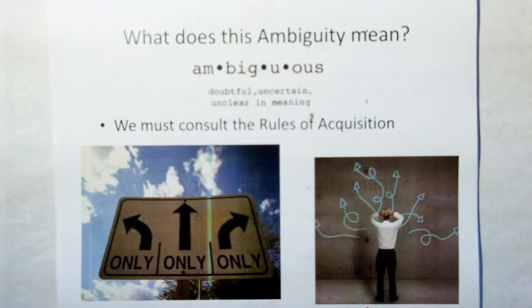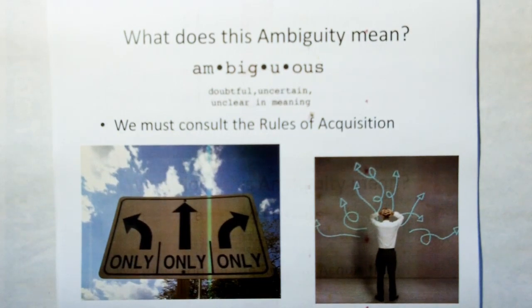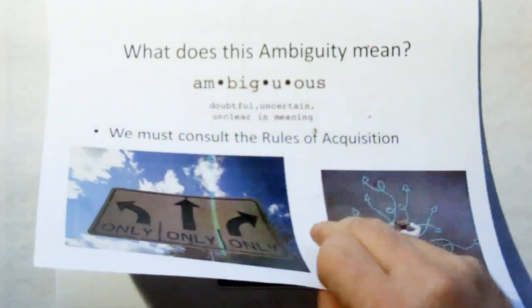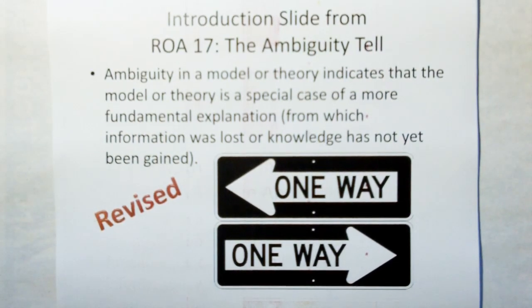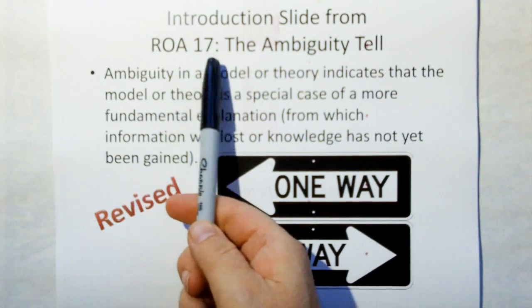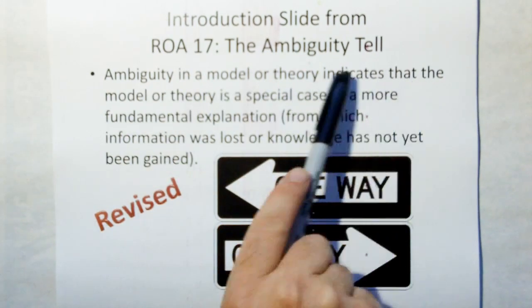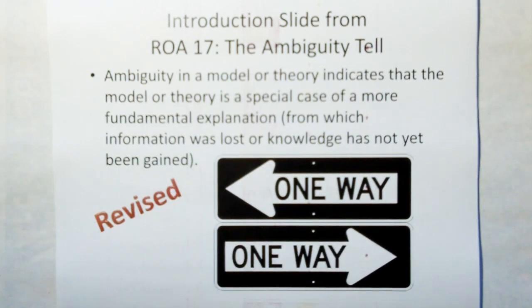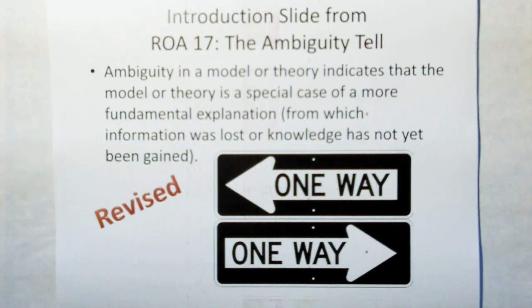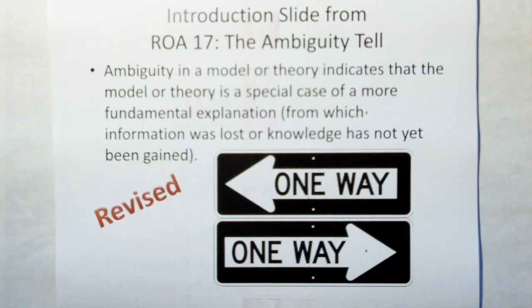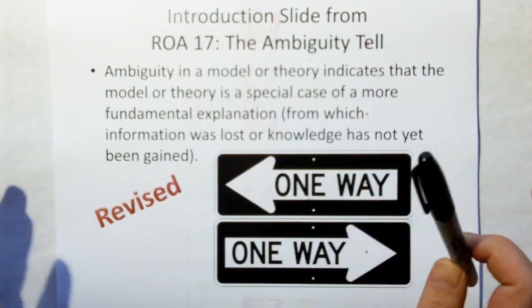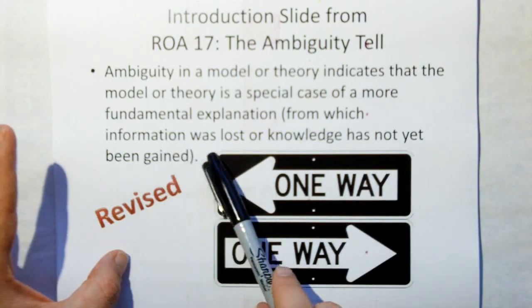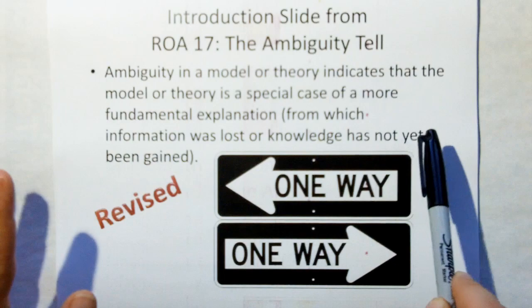Now, what does this ambiguity mean? Well, we have to consult the rules of acquisition for this. Rules of acquisition are very specific about what an ambiguity means. This is the cover page from the video, the rule of acquisition video, called the ambiguity tell, which is rule of acquisition 17. And the ambiguity in model theory indicates that the model theory is a special case of a more fundamental explanation. In other words, what we have may still be useful, but the ambiguity due to the circular definition means it's not the most fundamental description of the phenomenon. The reason why you get the ambiguity is because some information was lost somewhere or certain information or knowledge has not been yet gained.